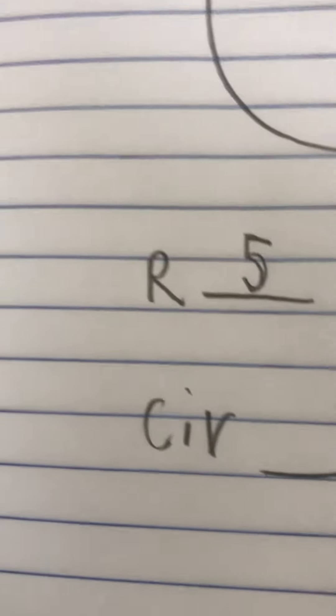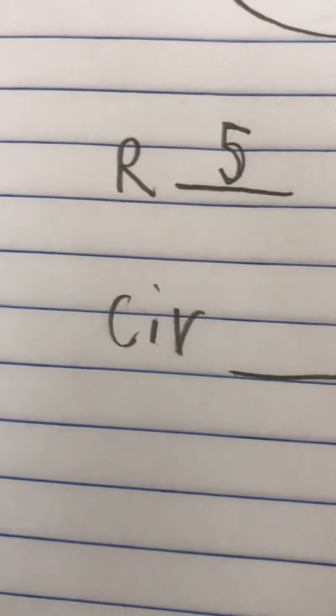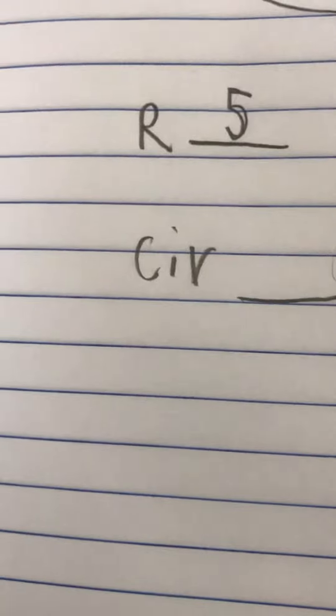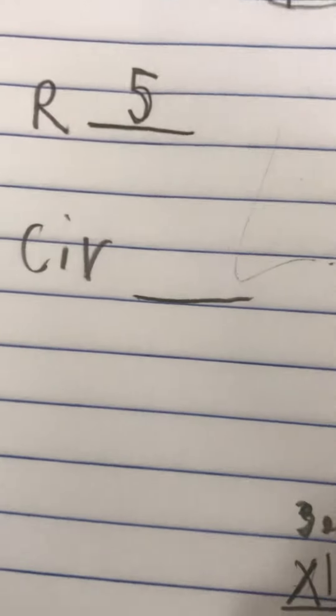So we do 10 and 3.14. We all know we don't have to write this, you can just add zero, but I'm just going to show you guys how. Anything multiplied by 0 is 0.